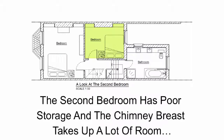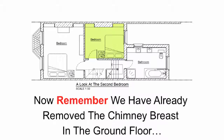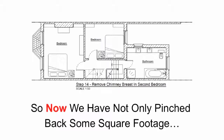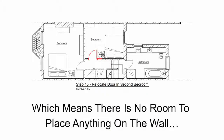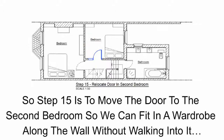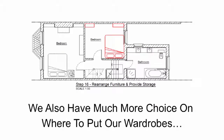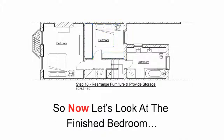Next we look at the second bedroom. The second bedroom has poor storage and the chimney breast takes up a lot of room, dictating the wardrobe sizes we can get in as we can only use wardrobes that fit between the side walls and the chimney breast. Since we already removed the chimney breast on the ground floor, in step 14 we are going to do the same here and get rid of the chimney breast in this room too. Now we've pinched back some square footage and made the room a lot more flexible in terms of storage and furniture arrangements. And speaking of flexibility, the entrance door to the second bedroom opens out onto the adjacent wall, leaving no room to place anything there. So step 15 is to move the door so we can fit a wardrobe along that wall. In step 16 we rearrange the furniture and provide more storage, and we can now use the side wall too since we've moved the door.